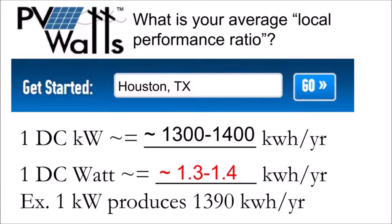If one kilowatt of rooftop solar produces roughly 1,400 kilowatt-hours per year, then one watt of solar will produce 1.4 kWh per year. That figure might be discounted 10 to 20% if the tilt angle is atypical, but these calculations can be performed mentally in conversation to be later confirmed with a 3D computer model and full shade analysis. A 5 kW solar array will produce 7,000 kWh per year. A home that uses 11,000 kWh of electricity per year will need around an 8 kW solar array to fully offset its energy use.